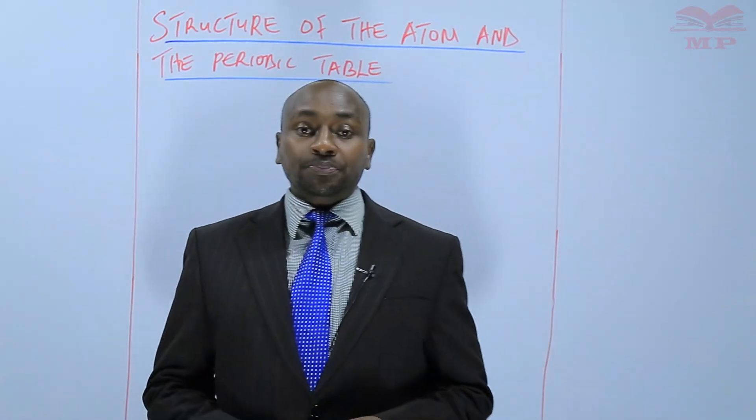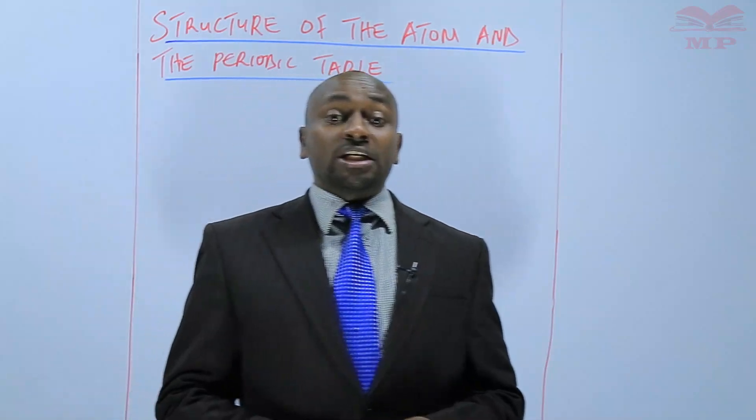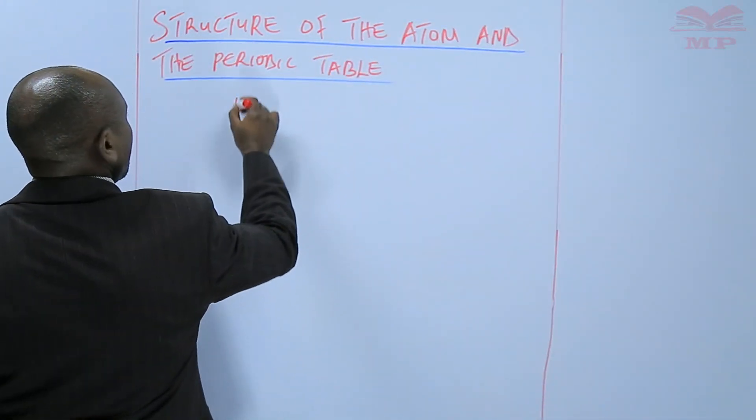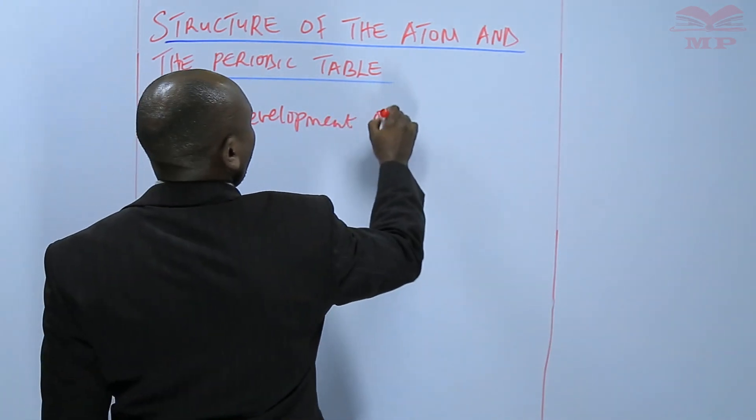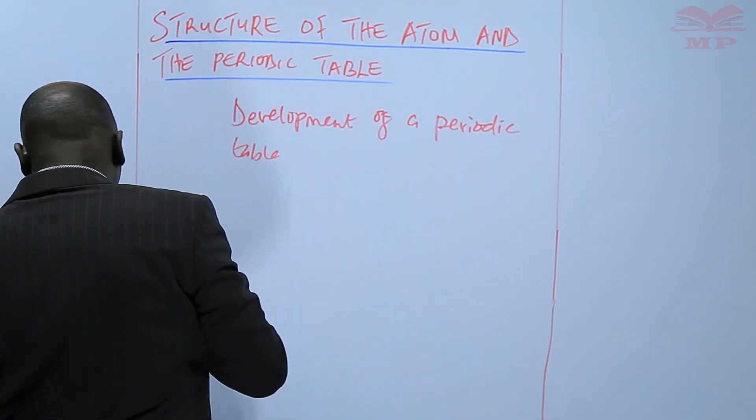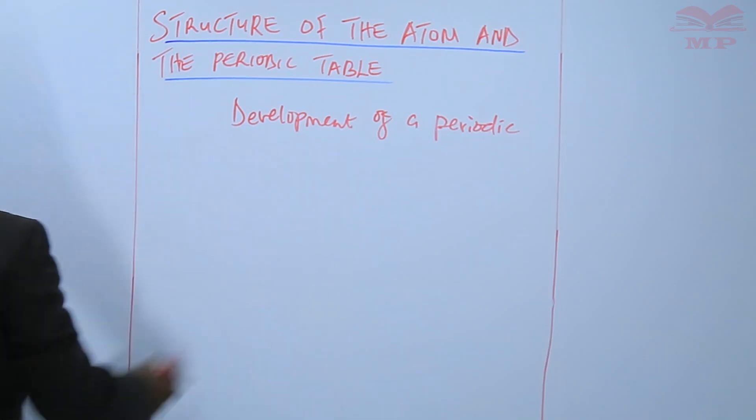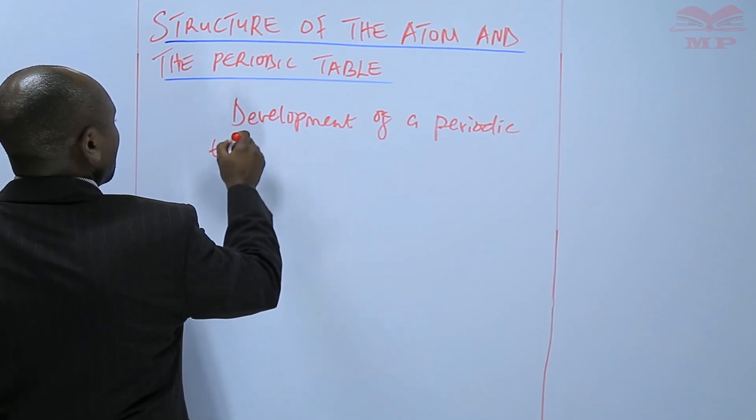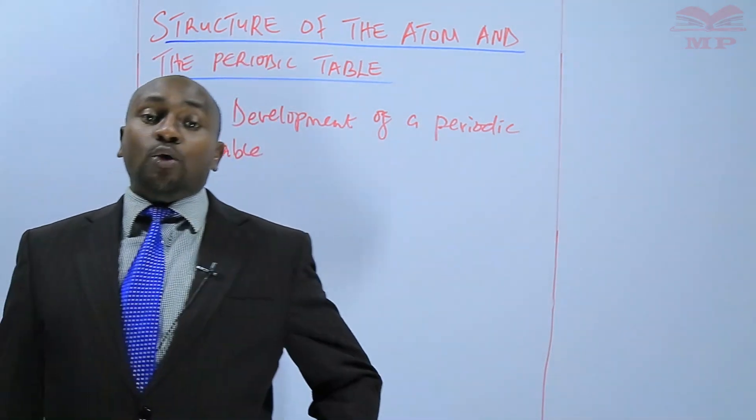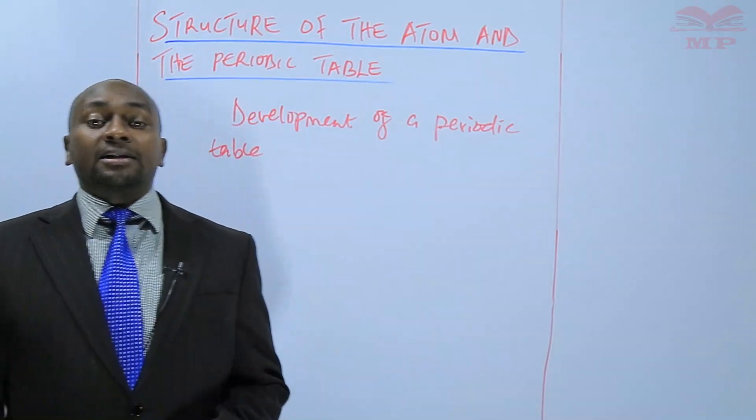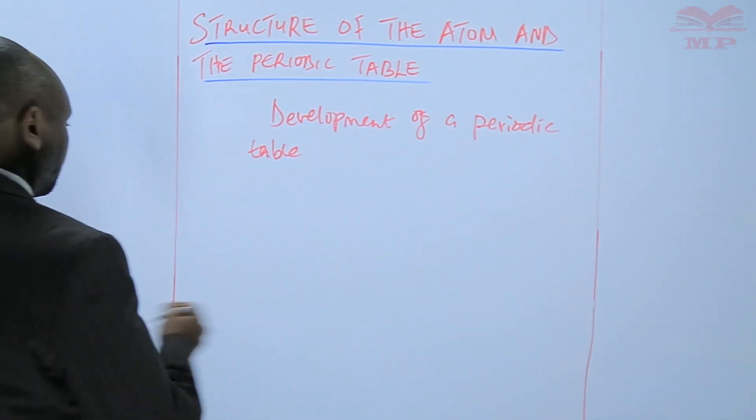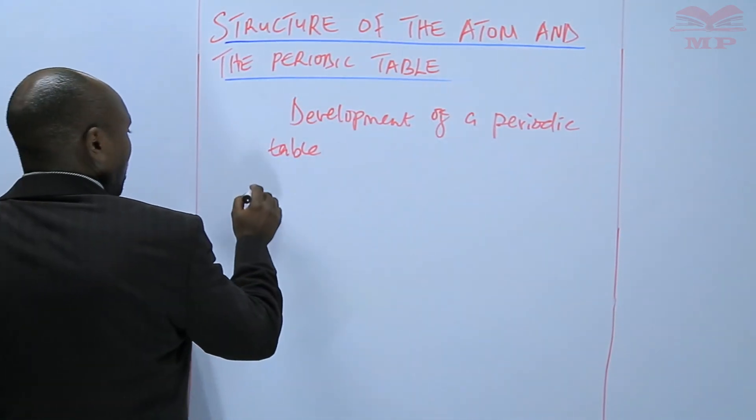So today we want to see how a periodic table is developed, putting into consideration the groups and periods. We're going to discuss development of a periodic table, and as we develop it, we are going to concentrate on the first 20 elements. These are the elements we have encountered previously, from hydrogen all the way to calcium.